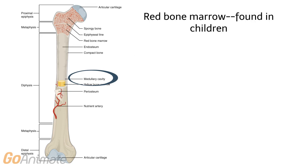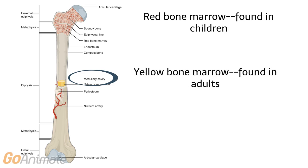Red bone marrow is found in children and produces blood cells. In adults, most of the red marrow has been converted to yellow marrow. Some bones, including the bones of the skull, vertebrae, sternum, ribs, coxal bones, and proximal portions of the humerus and femur, still contain red marrow.